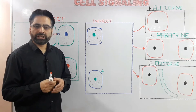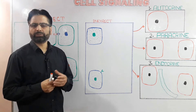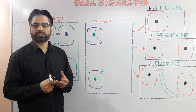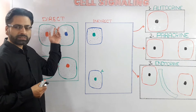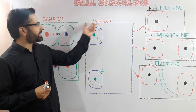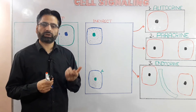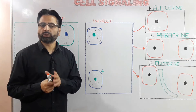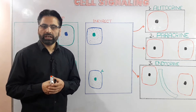At the very basic level, cell signaling can be of two types: one is direct cell-cell communication, and another is indirect or extracellular cell-cell communication.